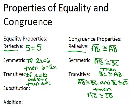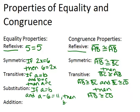The substitution property of equality says that if two things are equal — for example, if A equals B — then you can always replace A with B anytime you have an A. So if A equals B and A minus 6 equals 11, then B minus 6 will also equal 11. You can replace A with B because they're equal. That's substitution.